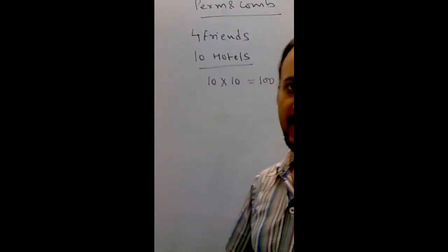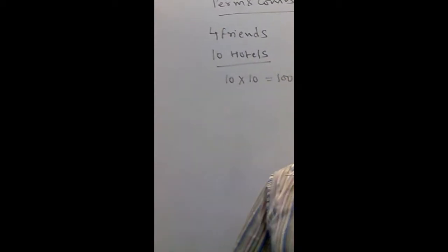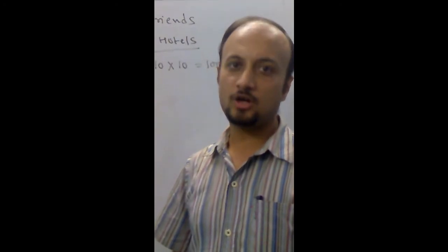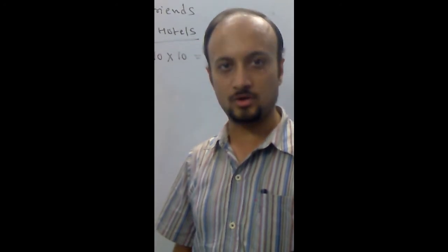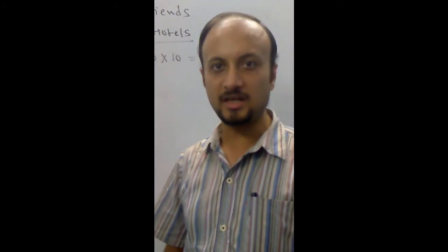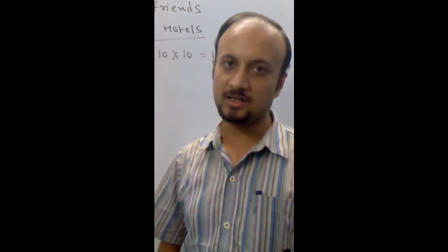Say, first friend has stayed in H1, hotel 1, second can stay in H1, H2, H3 and so on H10, can give me ten ways. Similarly, corresponding to second way, corresponding to first staying in hotel 2, there will be ten ways for the second to stay, again ten ways. Similarly, for H3, H1 to H10, ten ways and so on. For H10, in which first one is staying, H1 to H10, ten ways for the second one to stay. So, all in all, ten ways, ten times makes hundred ways.